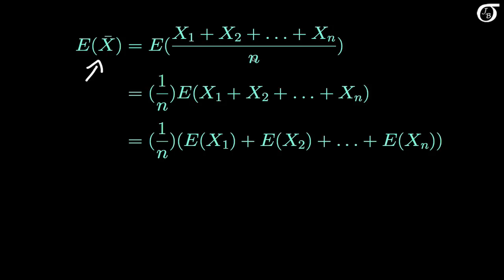When we multiply by a constant, the expectation gets multiplied by that constant. So we can take 1 over n outside of the expectation. The expectation of the sum is always equal to the sum of the expectations, so the expectation of the sum of X1 through Xn equals the sum of the individual expectations of X1 through Xn.